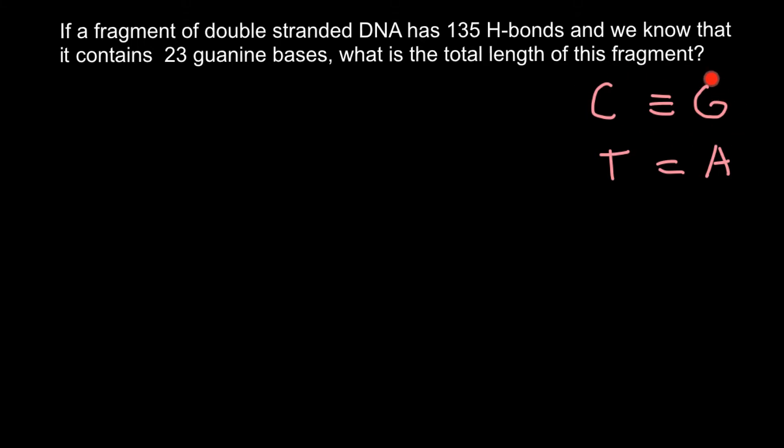Because C and G look similar, this base pair has a triple bond. T and A don't look similar to each other, and that's why they have a double bond. This mnemonic helps you remember which bases have triple bonds and which have double bonds. Now we can solve the simplified problem.